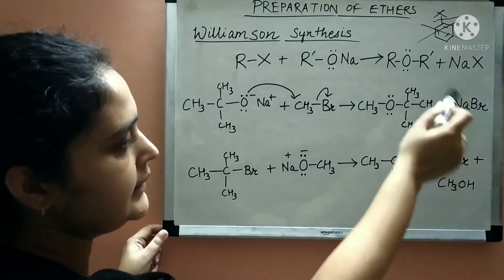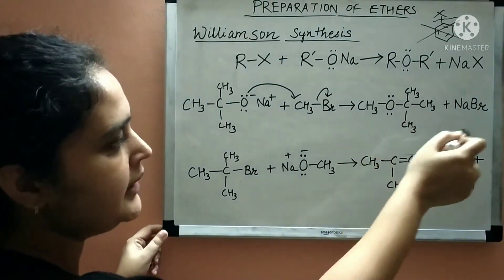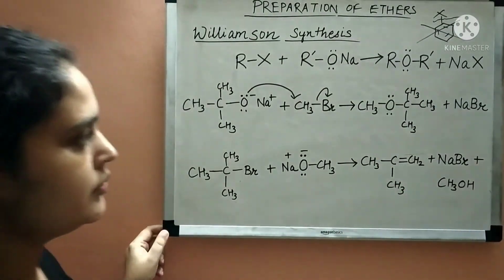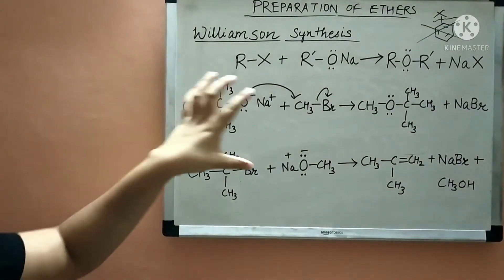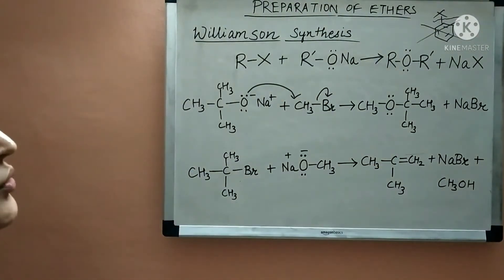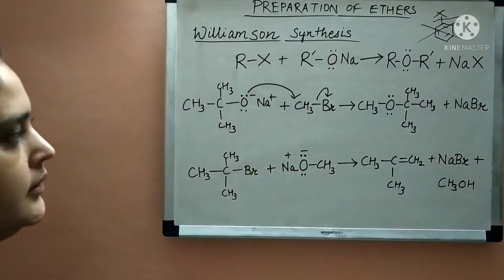The ether is formed along with sodium bromide as a byproduct. This is Williamson synthesis to produce ether.